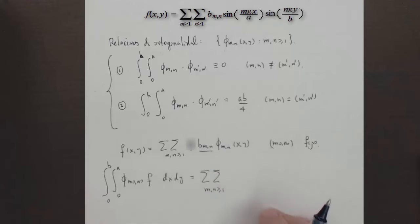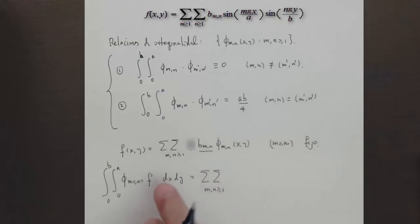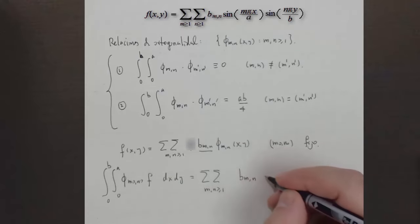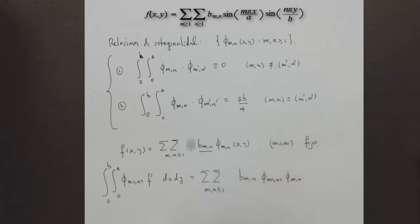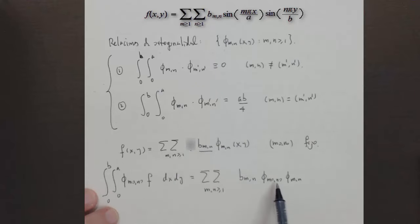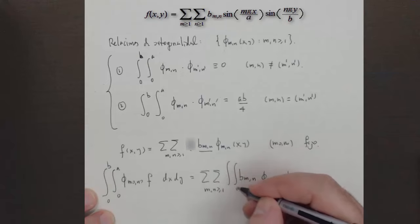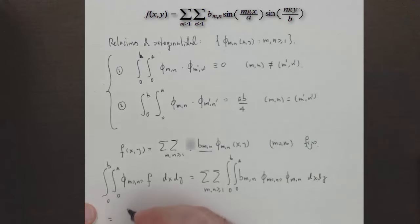Suponemos un teorema del análisis por el cual esta integración dentro de la suma puede hacerse sin problema. Entonces aquí tendríamos, para cada parejita MN que aparece en la suma, el término BMN por la integral de Phi M0N0 por Phi MN. Lo mismo a ambos lados de la ecuación, integrando entre 0 y A y entre 0 y B con respecto a X y a Y. Nos queda esta doble integral.